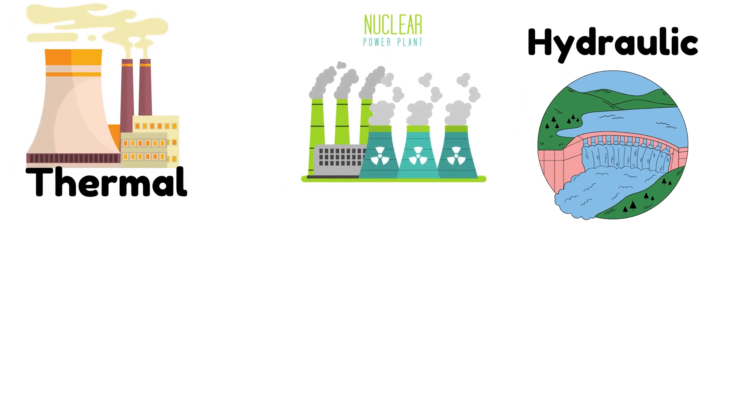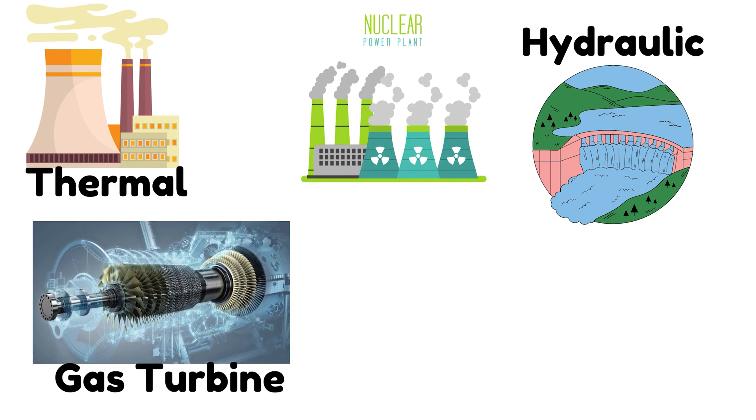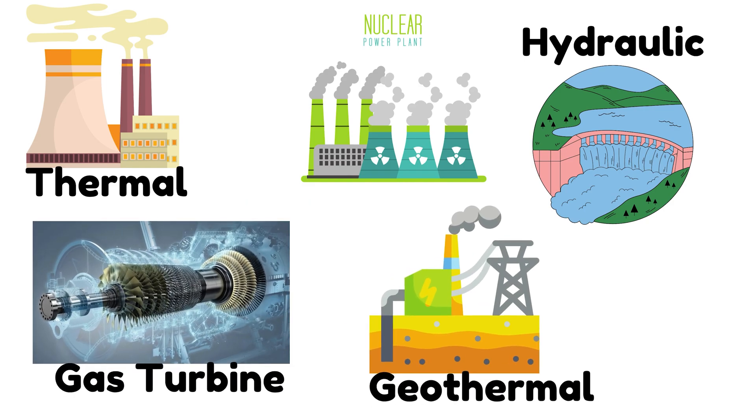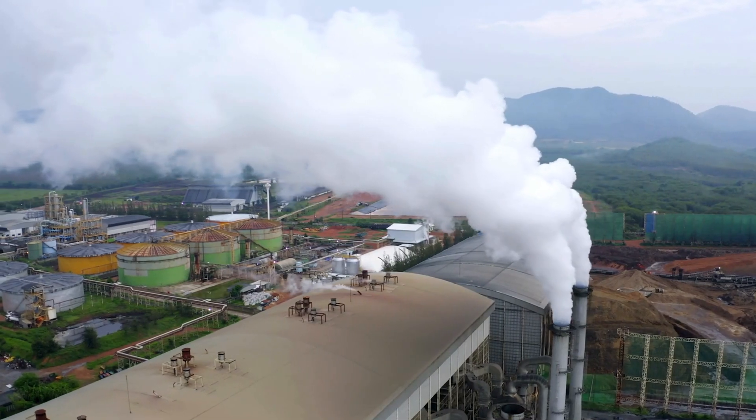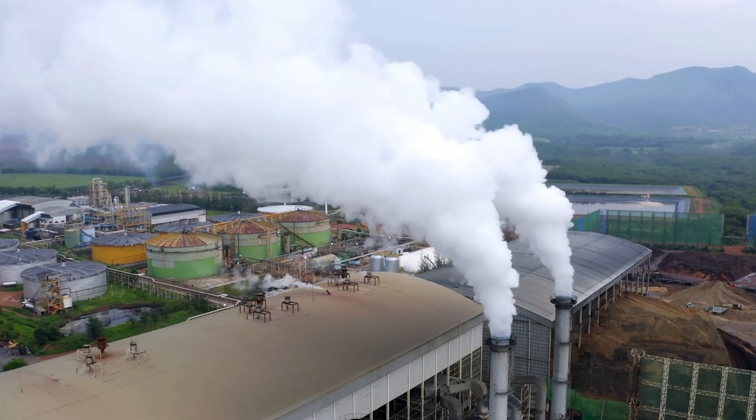Electricity in bulk quantities is produced in power plants which can be thermal, nuclear, hydraulic, gas turbine, and geothermal. Thermal, nuclear, and geothermal power plants work with steam as a working fluid and have many similarities in their cycle and structure.